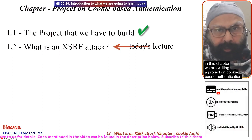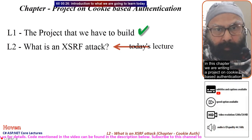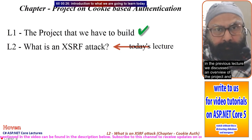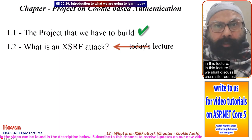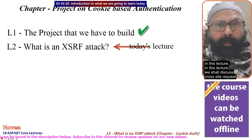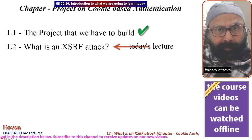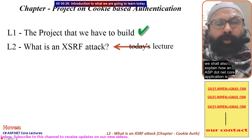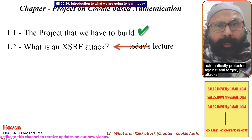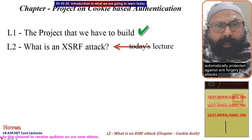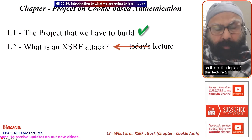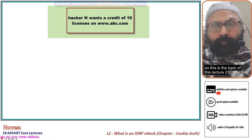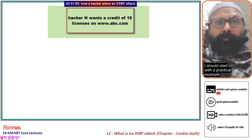We are working on a project on cookie-based authentication. In the previous lecture we discussed an overview of the project. In this lecture we shall discuss cross-site request forgery attacks and explain how an ASP.NET Core application is automatically protected against anti-forgery attacks.